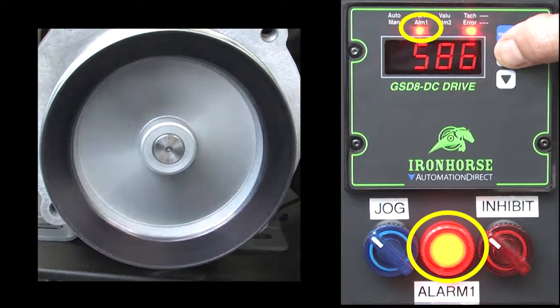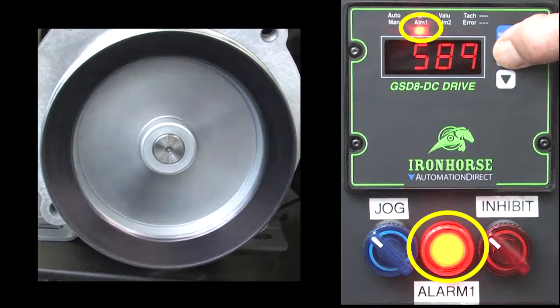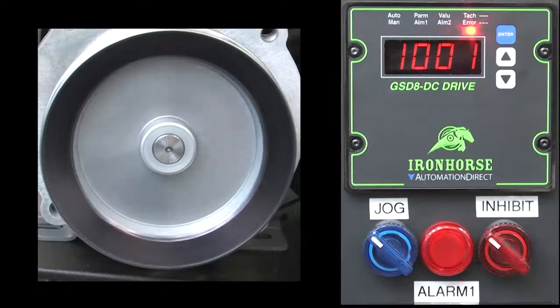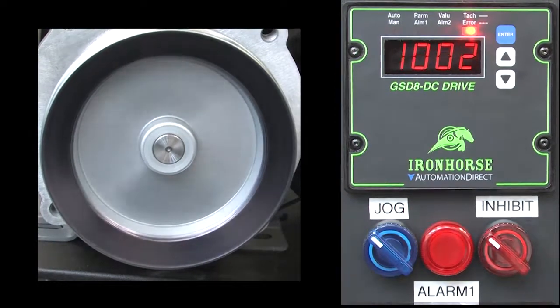But if we stop before getting there, sure enough alarm 1 goes active. If I continue to 1000 RPM, then the alarm auto resets – exactly what we asked it to do back in parameter 53.